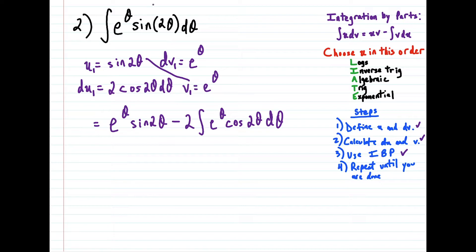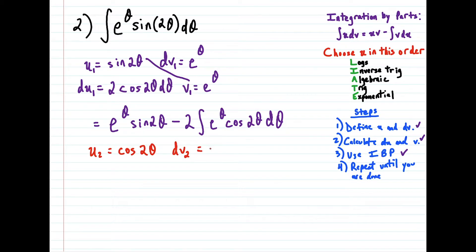Because for the next part, to handle this new integral, our new u term is going to be u₂ equal to cosine 2θ. And then dv₂ is equal to the leftovers in this integral, which is going to be e to the θ dθ. Notice up here it's a little bit sloppy — I should have a dθ attached. Notation like that is definitely important, so make sure we write everything correctly here.